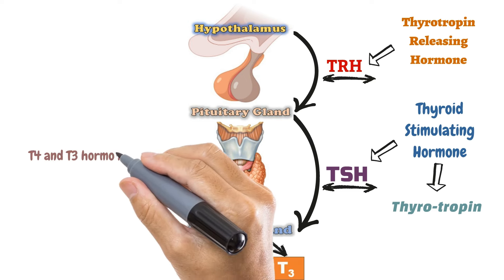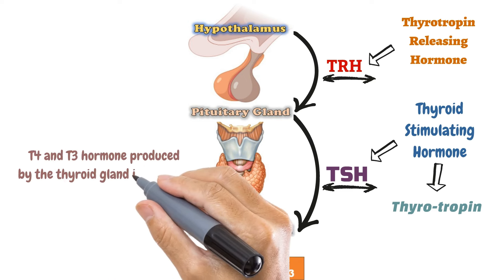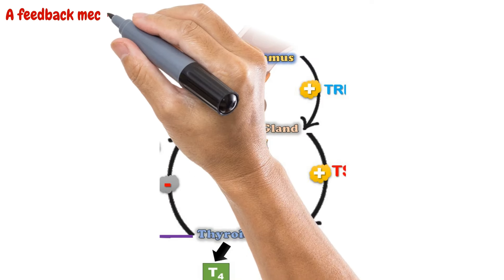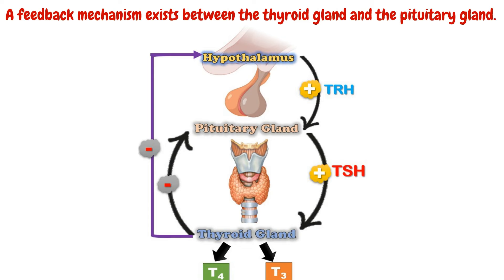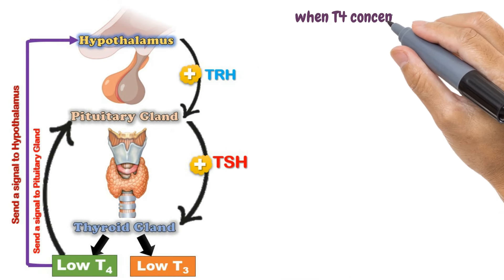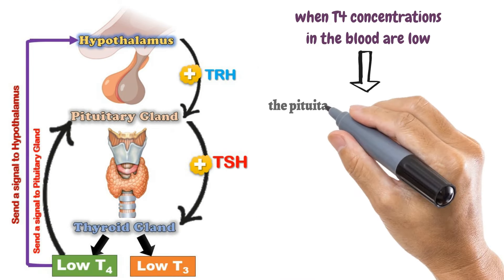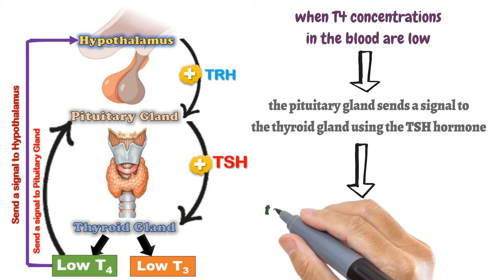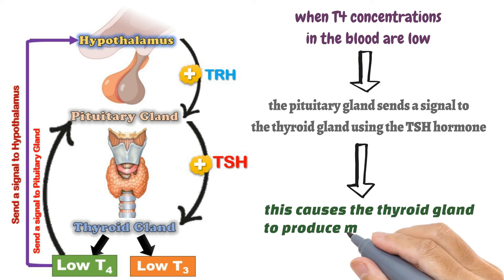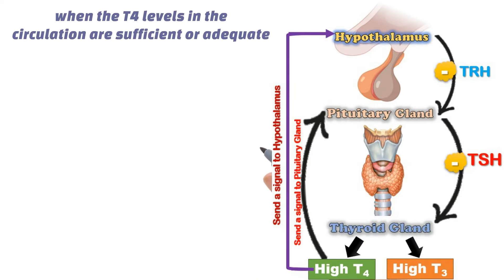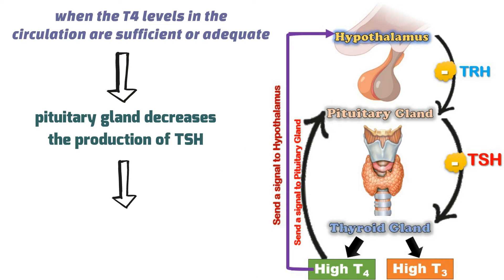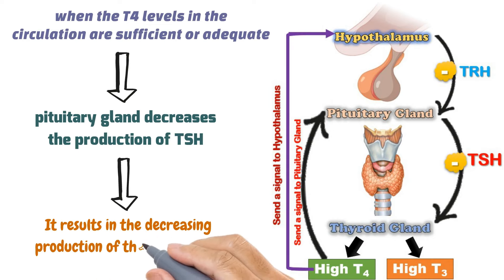T4 and T3 hormones are produced by the thyroid gland in response to stimulation by the pituitary gland. A feedback mechanism exists between these two glands: when T4 concentration in the blood is low, the pituitary sends a signal via TSH to increase T4 production. When T4 levels are adequate, the pituitary decreases TSH production, ultimately reducing T4 output.